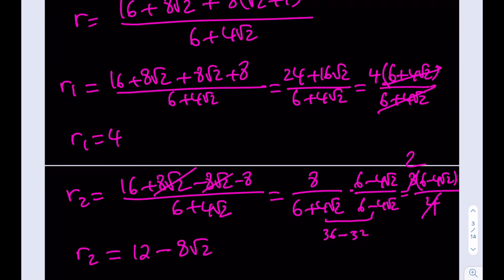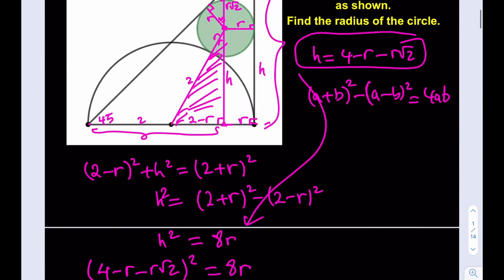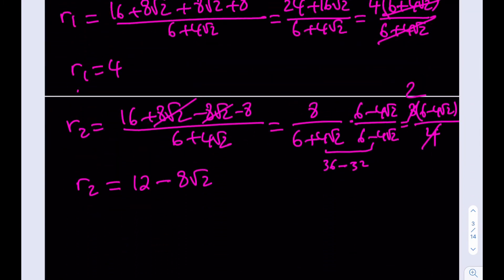So, we have now two solutions. Which of them is going to work? We have to decide on one. Now, 8√2 is about 11.2 maybe, something like that. So, this number is pretty close to 1. R₂ is 0.9-ish maybe. R₁ is 4. Let's go back to the picture and see which one makes more sense. Well, we do know that the side length for the triangle is 4, which is also the diameter for the semicircle, right? Well, the radius cannot be 4 then. 4 is way too large. R needs to be less than 4, way less than 4. So, we're just going to reject the first solution. And we're going to go with the second one. So, the radius of the circle is 12 - 8√2.